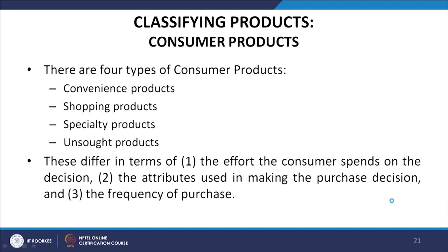Now let us look at how to classify consumer products. There are four types: convenience products, shopping products, specialty products, and unsought products. They differ in terms of the effort the consumer spends on making a purchase decision, the attributes used in making the purchase decision, and the frequency of purchase.